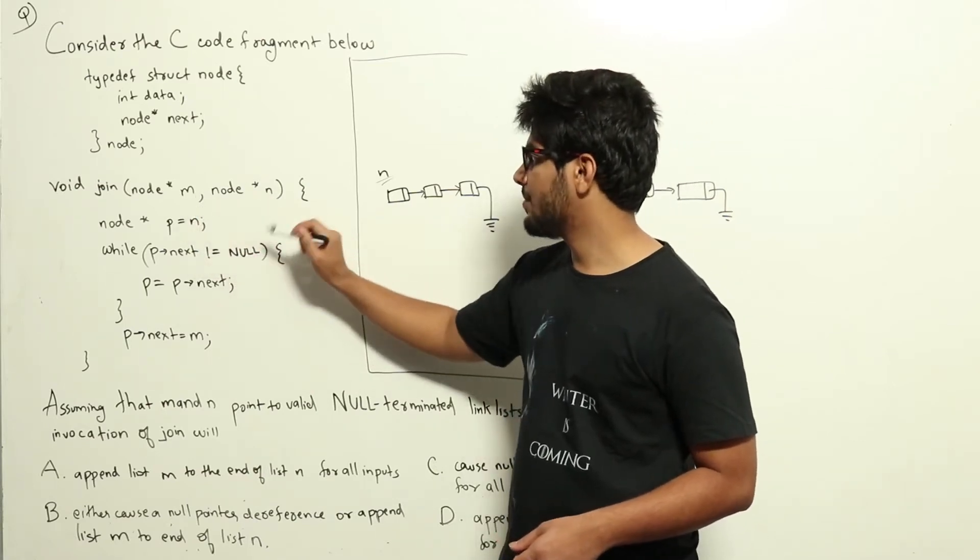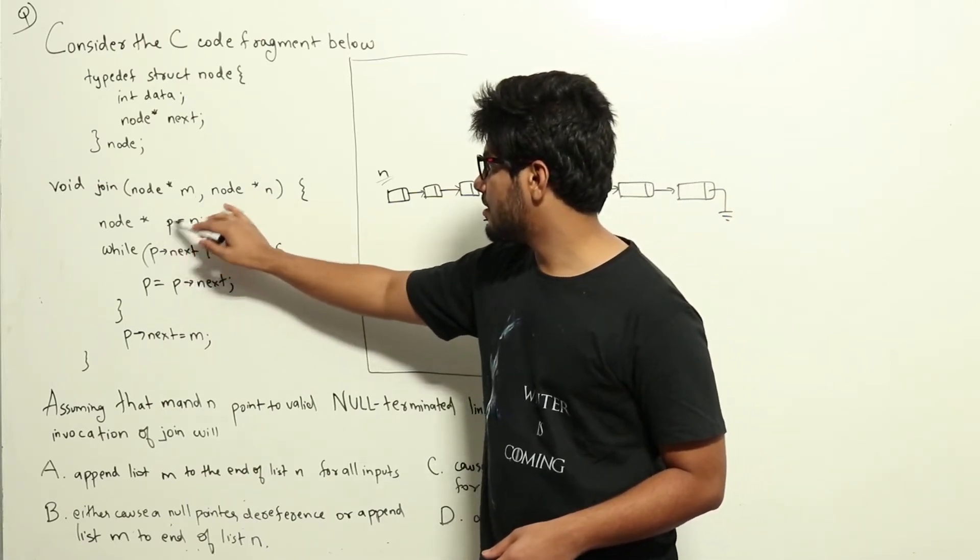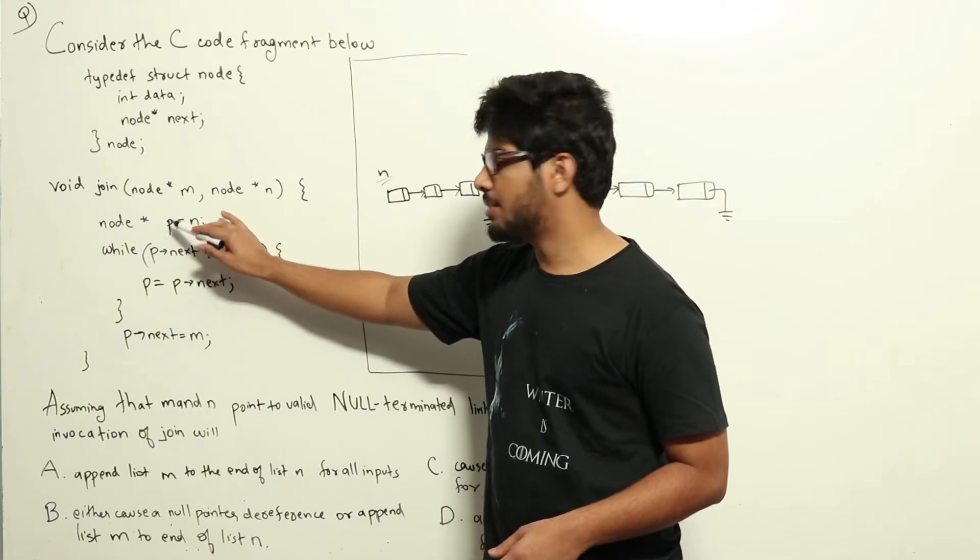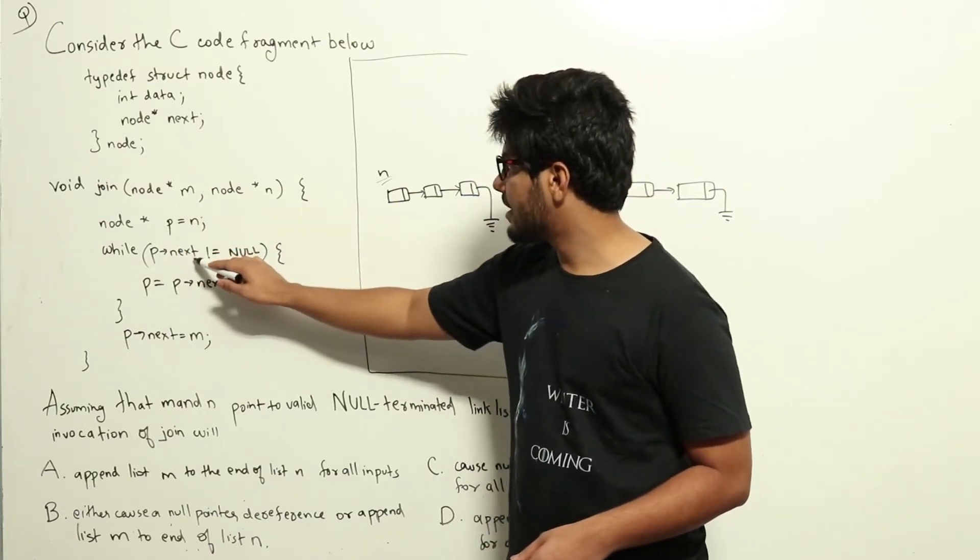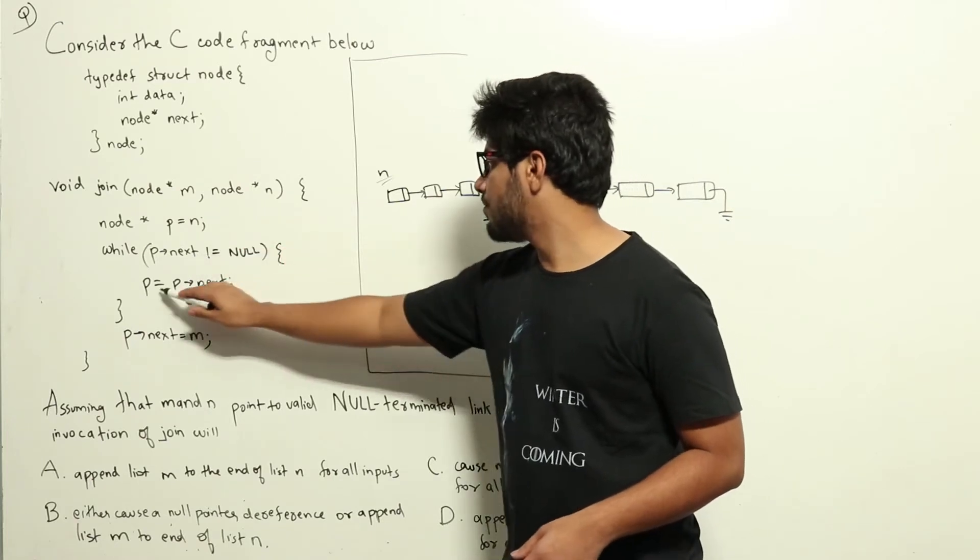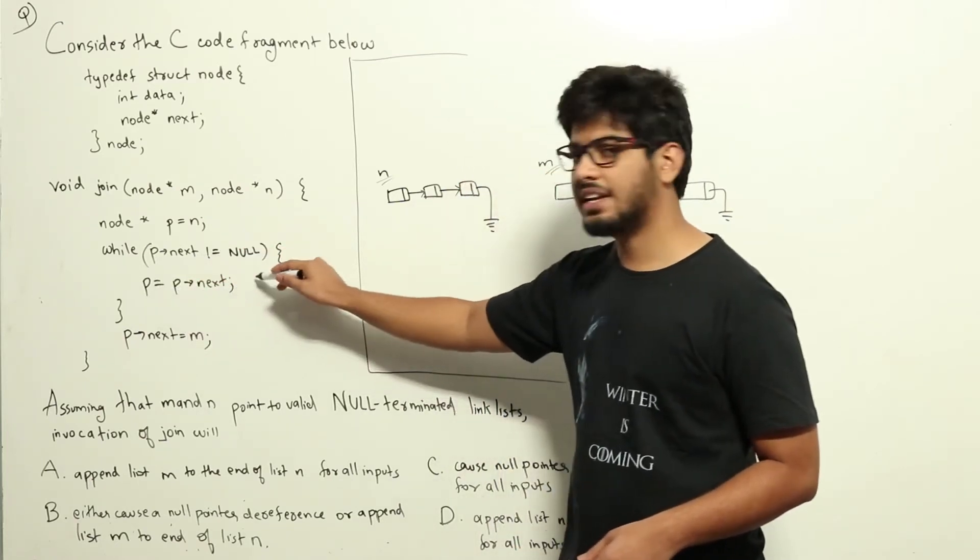The pointer to the pointer to the first node. And then there will be a pointer P that is used to iterate through this link list. And while P dot next not equal to null, we will be making P equals P next.